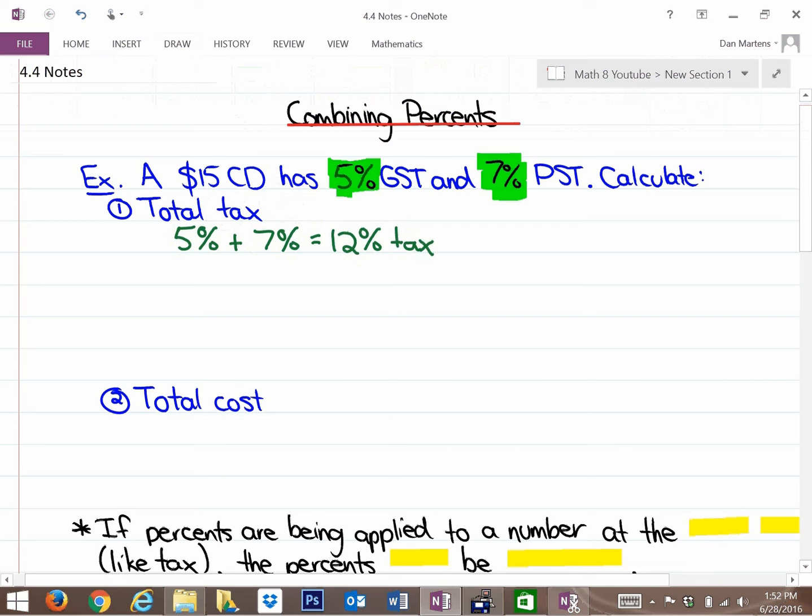The reason we're allowed to combine the taxes here is because they occur at the same time. If you go to the till when you're buying anything, they combine the tax at the till at the same time. But this question is asking what's the tax in dollars? So we actually want to calculate what is 12% of the $15 CD, because that's what the tax is.